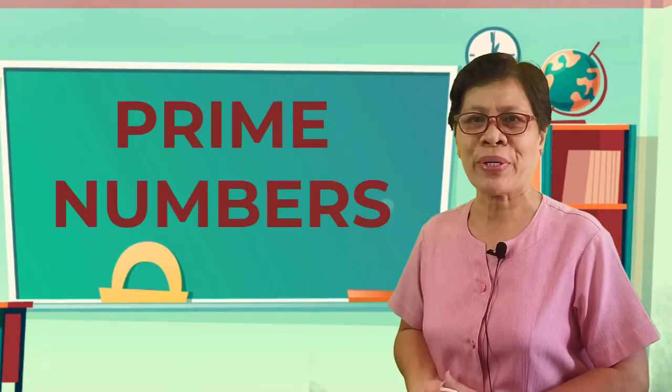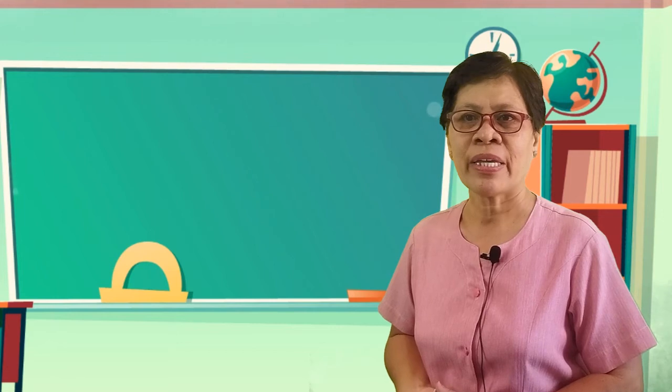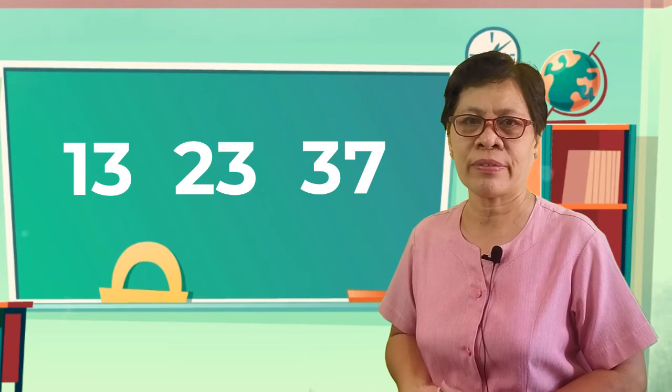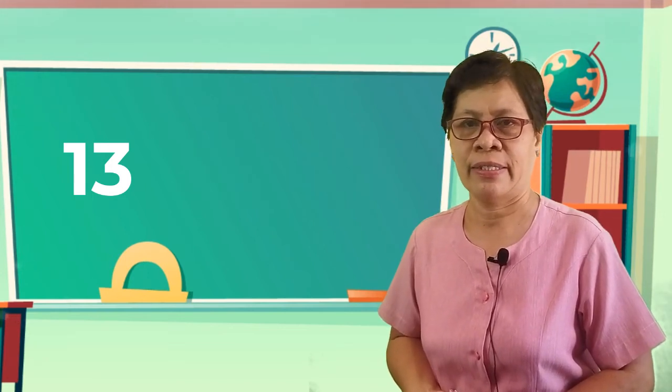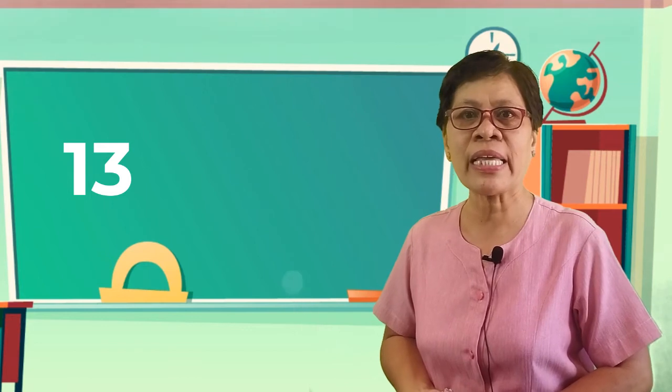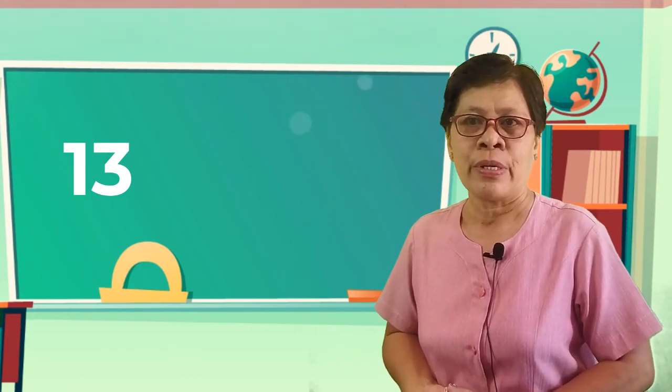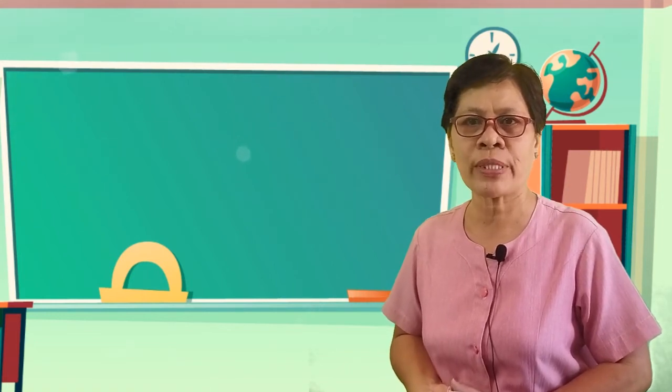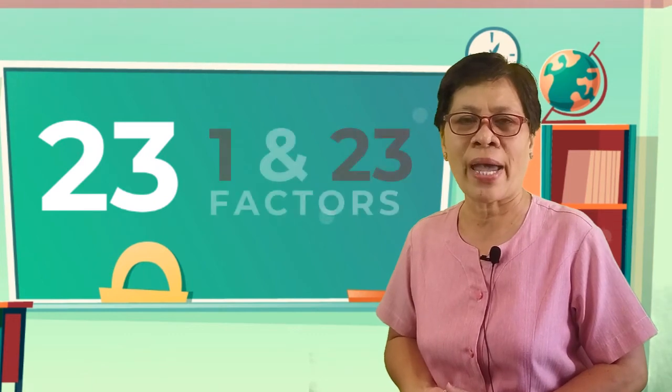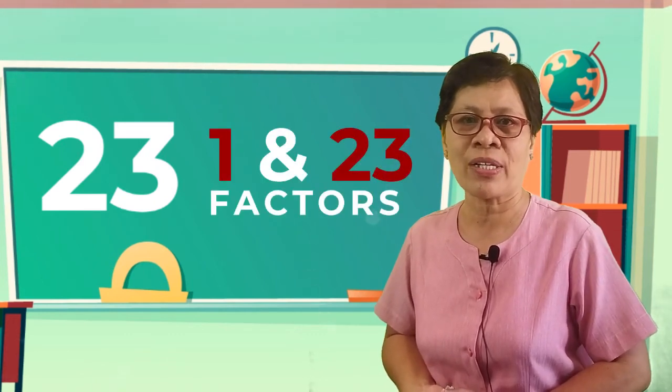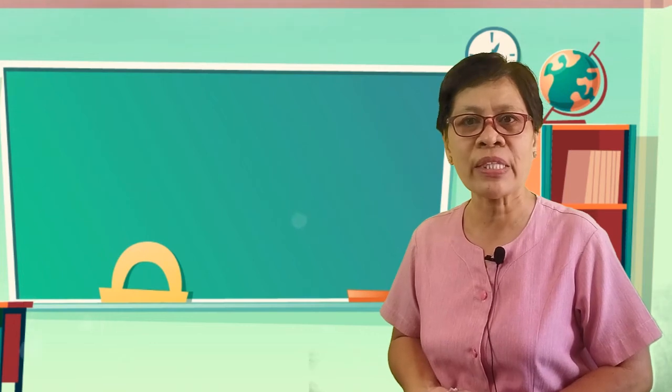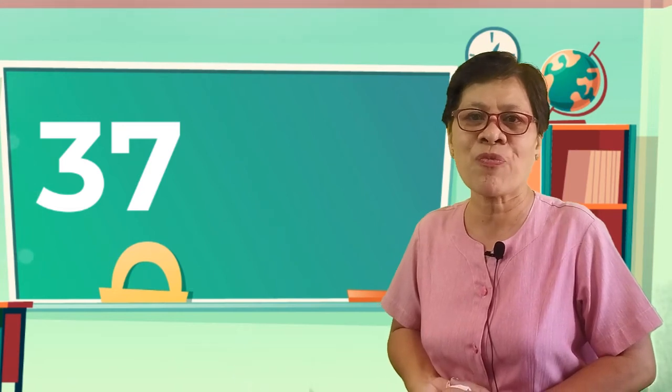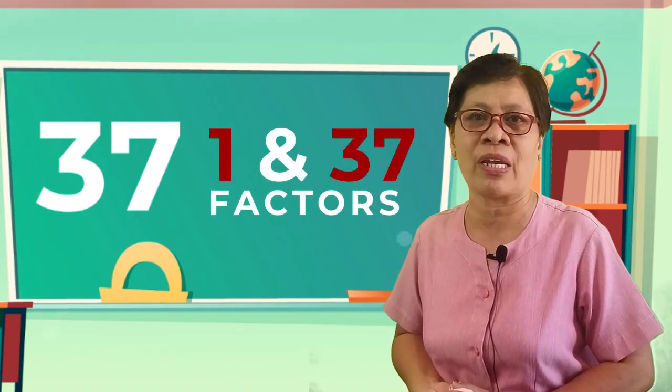What are the prime numbers? We have 13 which has 1 and 13 as its factors, 23 which has 1 and 23 as its factors, and also with 37 which is again a prime number because its factors are 1 and 37 only.